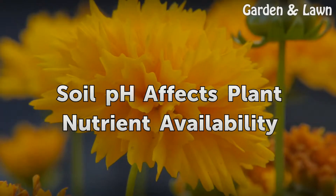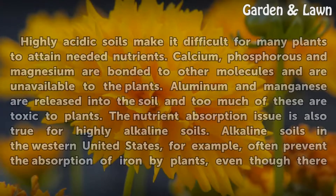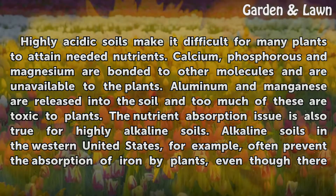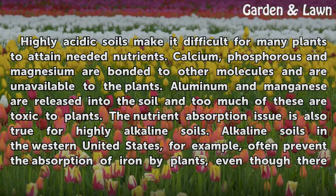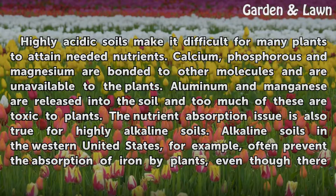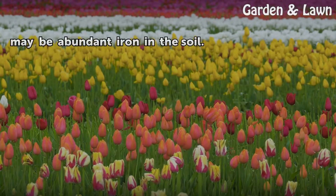Soil pH affects plant nutrient availability. Highly acidic soils make it difficult for many plants to attain needed nutrients. Calcium, phosphorus and magnesium are bonded to other molecules and are unavailable to the plants. Aluminum and manganese are released into the soil, and too much of these are toxic to plants. The nutrient absorption issue is also true for highly alkaline soils. Alkaline soils in the western United States, for example, often prevent the absorption of iron by plants, even though there may be abundant iron in the soil.